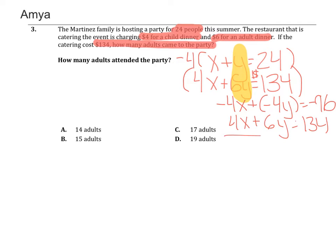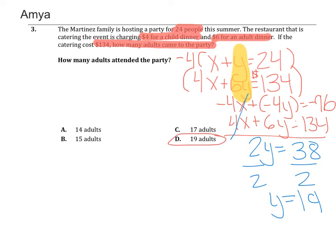And now I start my equations. I cancel this out. Here I'll get 2Y equals 38, divided by 2 on both sides, and I get Y equals 19. So there were 19 adults at the party.